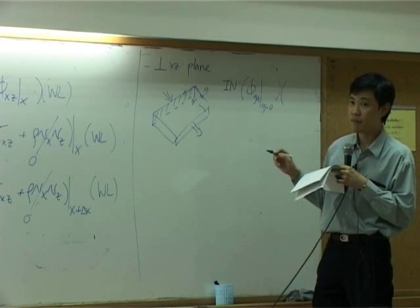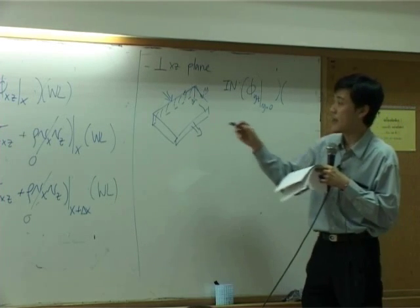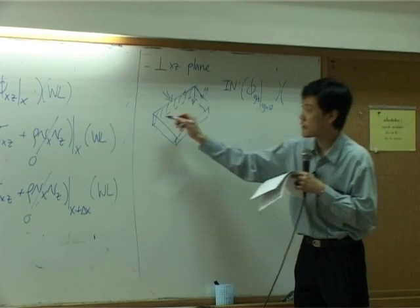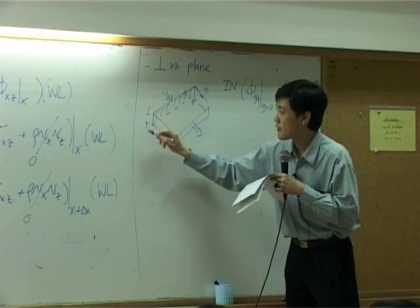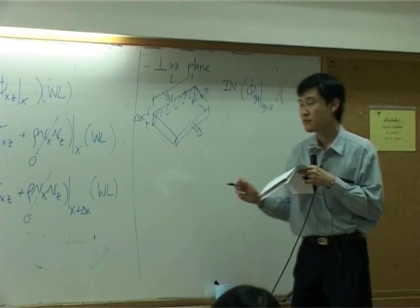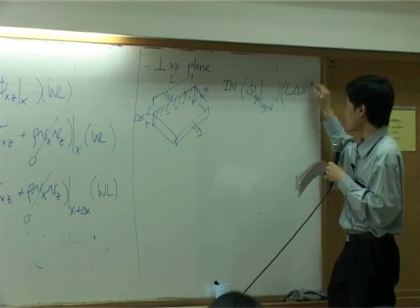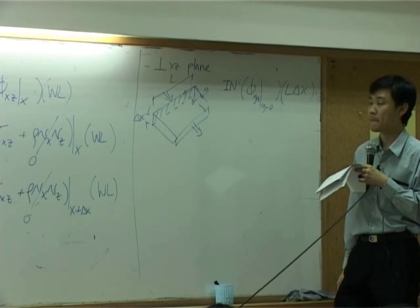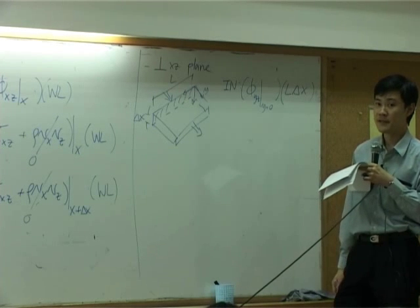Multiplying by the area perpendicular to it. The area shaded here is equal to the thickness of the shell, which is delta X, multiplying by the length here, which is L. So it's L delta X.